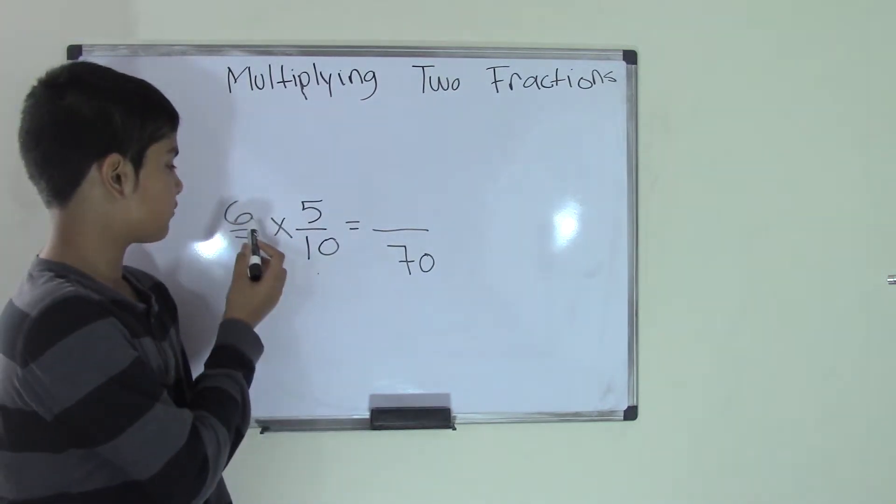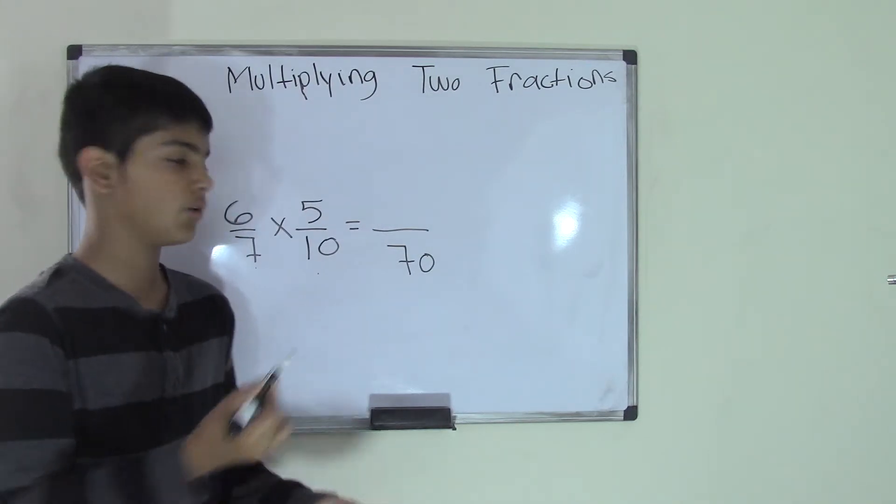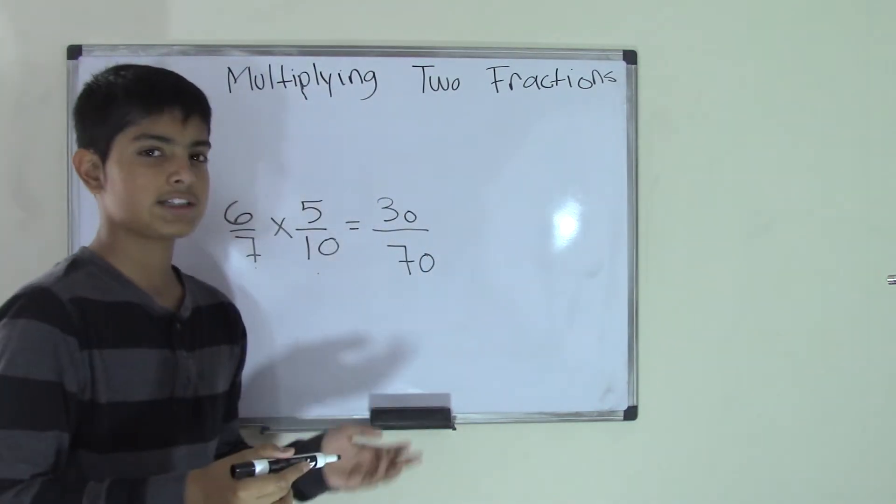And then we have to multiply the 6 and the 5, which are the numerators. And 6 times 5, we all know, is 30. So 30 over 70.